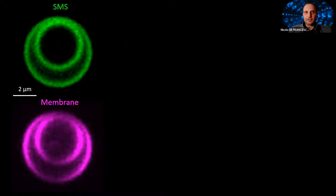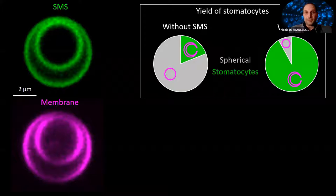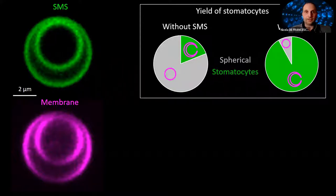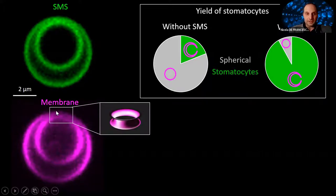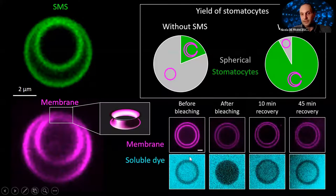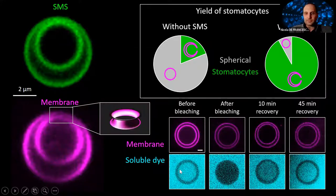In this image, you can see a single confocal plane of a stomatocyte obtained by using the SMS. If you produce liposomes in the way described earlier, you obtain a certain amount of stomatocytes, but the presence of the SMS dramatically increases the yield and makes these structures more stable, as shown in this quantification. A true stomatocyte must have an open toroidal pore connecting the inner compartment with the exterior. We proved this by creating stomatocytes in the presence of a soluble dye, bleaching the inner compartment, and observing fluorescence recovery — which can only happen if a toroidal pore is present.